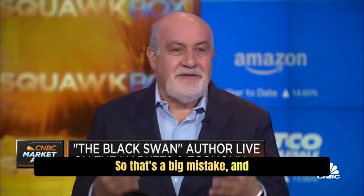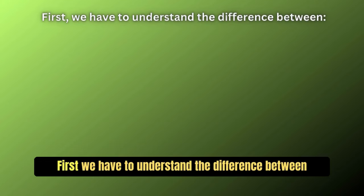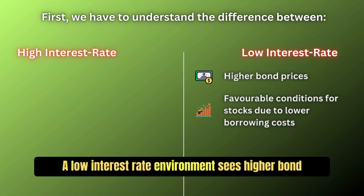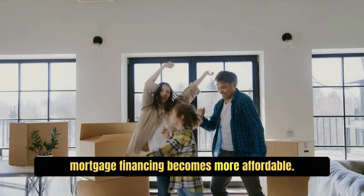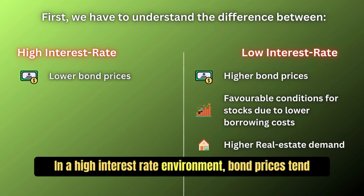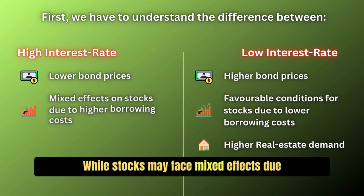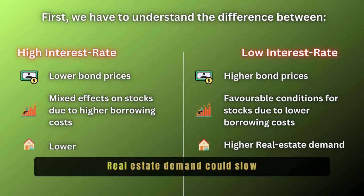We have to understand the difference between a high and a low interest rate environment. A low interest rate environment sees higher bond prices, potential capital gains, and favorable conditions for stocks due to lower corporate borrowing costs. Real estate demand may rise as mortgage financing becomes more affordable. In a high interest rate environment, bond prices tend to be lower, potentially leading to capital losses, while stocks may face mixed effects due to increased corporate borrowing costs.